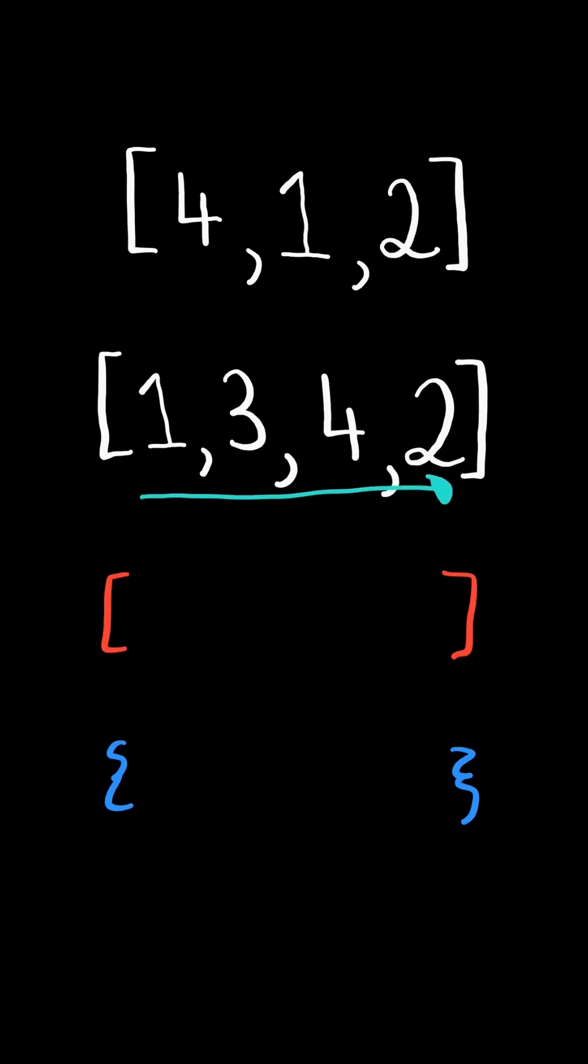We iterate through list 2 and add the number to the stack. If the number is greater than top of stack, then we found the next greater element of 1 is 3. We then pop the element from the stack and append the current number.